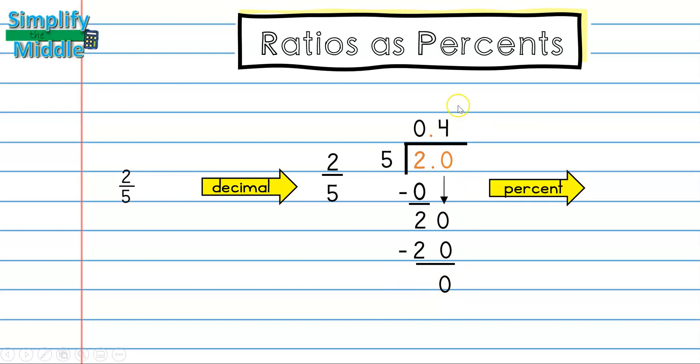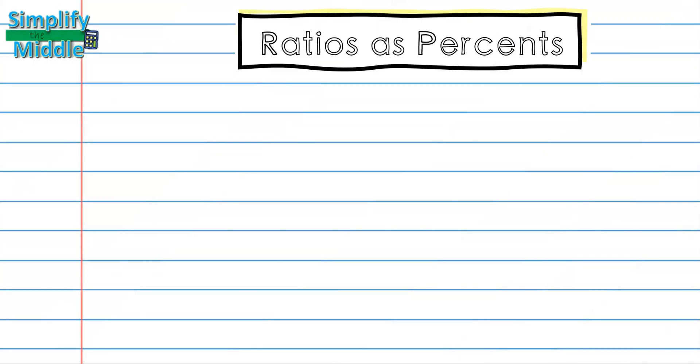So let's take our decimal, four-tenths, and convert it to a percent. I know that when I am going from a decimal to a percent, I'm going to be moving my decimal place two places to the right, so I end up with 40 percent. So you could say that I have 40 percent boxes out of the number of objects in my original problem.